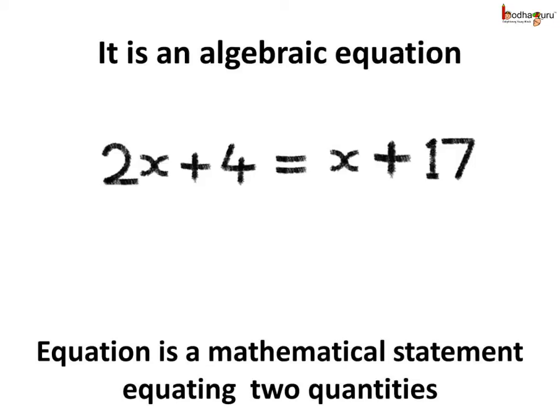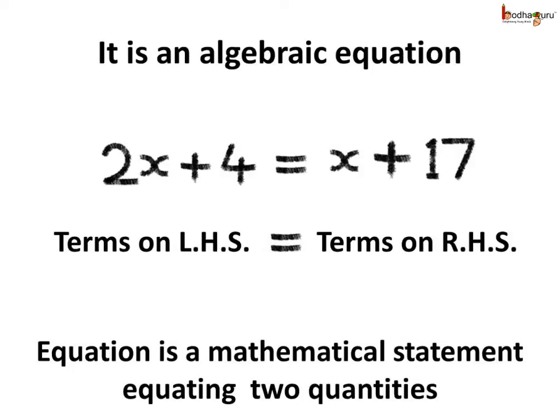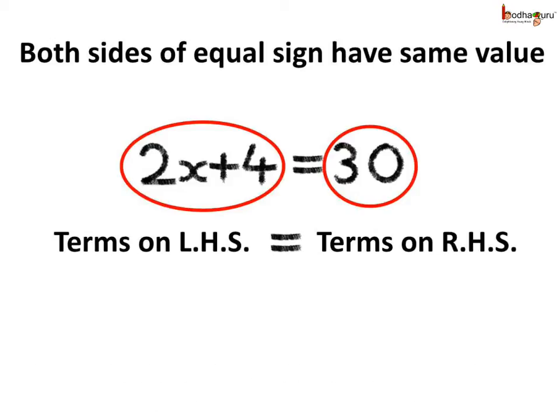For example, in this case, which is 2x plus 4 equal to x plus 17, we can say 2x plus 4 and x plus 17 have equal values. The terms on the left hand side, LHS in short, are equal to the terms on the right hand side, RHS in short. Thus, both sides of the equal sign have the same value.